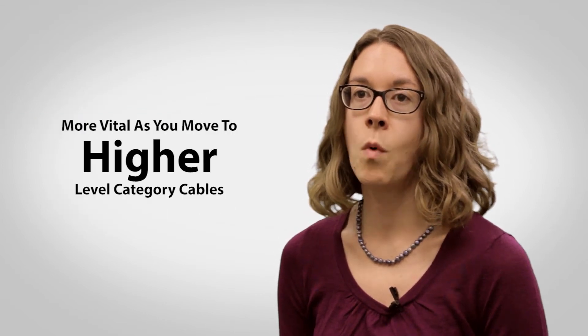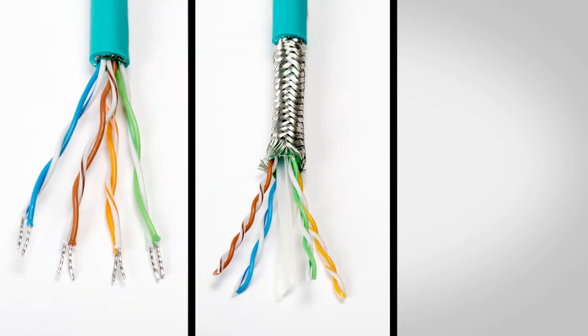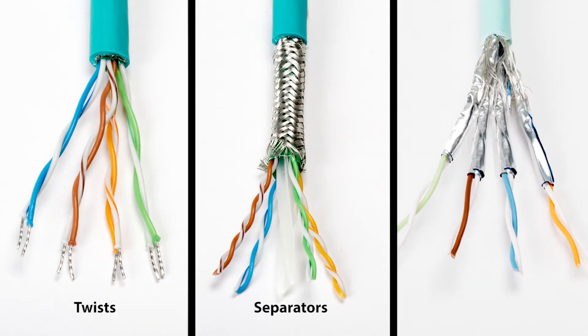This becomes even more vital as you move to higher level category cables, for instance CAT 6A or CAT 7. The pairs in these cables are further protected from one another by the amount of twists per pair, physical separators inside the cable, or even foil shielded pairs.